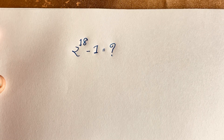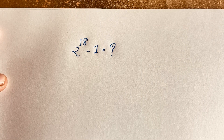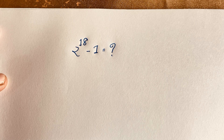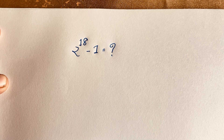Hello everyone. In this video we have solved this interesting Japanese Math Olympiad question. The question is 2 to the power 18 minus 1.